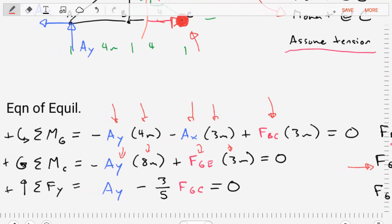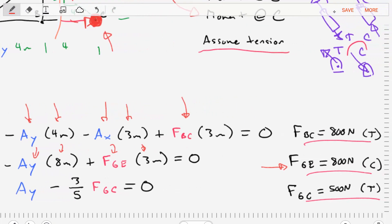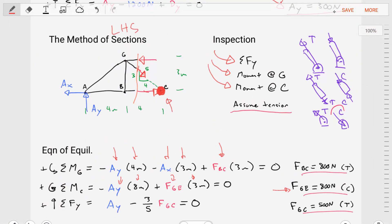And then our last one is the sum of the forces in the Y direction. We find there's only one unknown in that equation. It's the force in member GC, and that force ends up being 500 Newtons in tension.